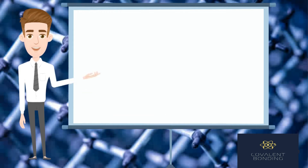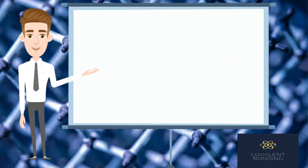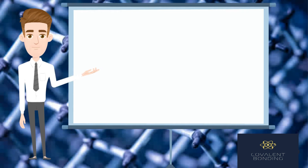The concept of orbital overlapping: according to this concept, a covalent bond is formed when an overlap takes place between the orbital of one atom and the orbital of another atom. Conditions required for orbital overlapping: 1. The orbitals belonging to the valence shell only take part in overlapping. 2. Each of the overlapping orbitals should contain an unpaired electron. 3. The electrons in the overlapping orbitals should have opposite spin.